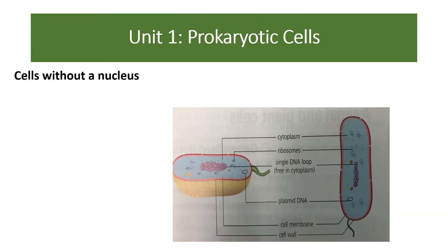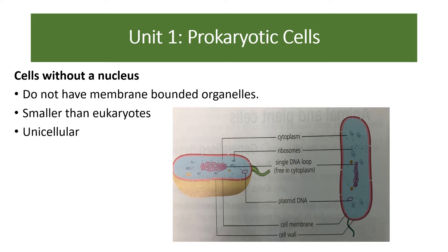There are also prokaryotic cells. Unlike eukaryotic cells — which have a nucleus — a prokaryotic cell does not have a nucleus, so its DNA is free within the cytoplasm. Prokaryotic cells, such as bacteria, have no membrane-bounded organelles (so no mitochondria or chloroplasts). They do have a cell wall, but it's made of something different from cellulose. They are smaller than eukaryotic cells and are unicellular (single-celled), whereas eukaryotic cells are multicellular.